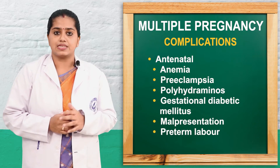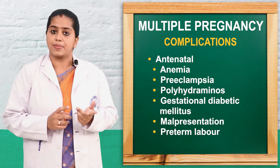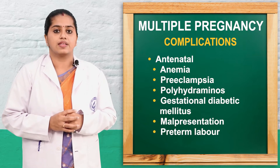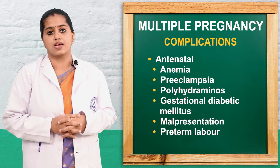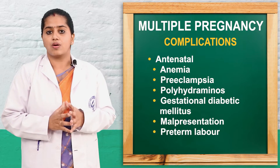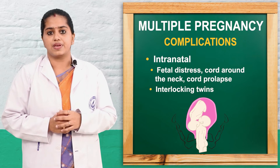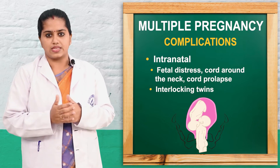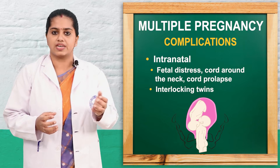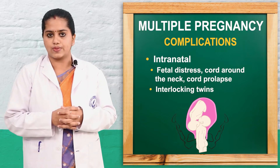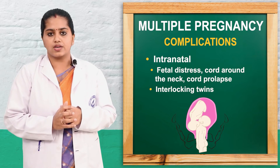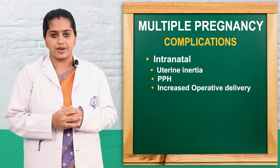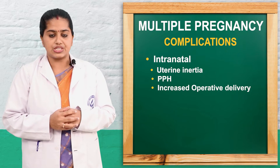Next, the complications. In the antenatal period, they can have anemia, preeclampsia, polyhydramnios, hypertension, gestational diabetes mellitus, miscarriages, malpresentations, and preterm labor. In the intranatal period, complications include fetal distress, cord around the neck or entanglement, and interlocking of twins. When the first twin is a breech and the second is vertex, chin-to-chin locking and interlocking can occur. In this case, we may have to sacrifice one twin or perform fetal disimpaction. Other issues include postpartum hemorrhage, increased operative deliveries, and uterine inertia.